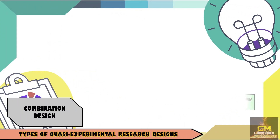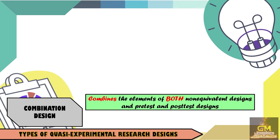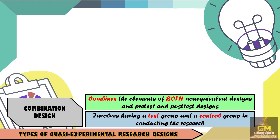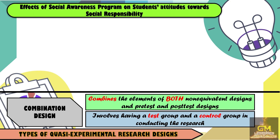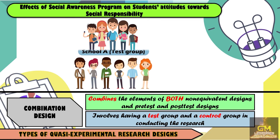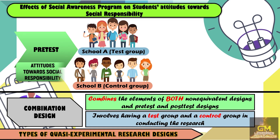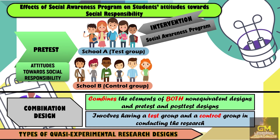Lastly, we have the combination design, which combines the elements of both non-equivalent designs and pre-test and post-test designs. It is also worth noting that the combination design involves having a test group and a control group in conducting the research. Let's consider this example wherein we have a study that aims to identify the effects of a social awareness program on students' attitudes towards social responsibility. We're going to have two groups: students from school A, which is going to be the test group, and students from school B, which will be the control group. Both the test group and control group will undergo a pre-test in order to identify their initial attitudes towards social responsibility. However, only the students in school A, which is the test group, will undergo the intervention — the social awareness program.